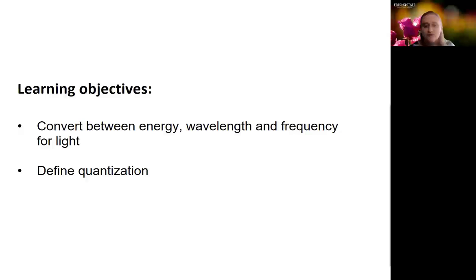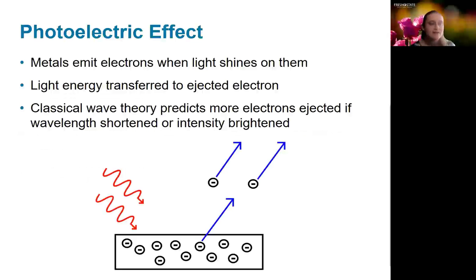So first of all, we're going to look at a classic experiment, which is the photoelectric effect. The photoelectric effect is illustrated from a classic experiment where light of a specific frequency is shined onto a metal and electrons are emitted from that metal. This means that the light is transferring energy to the metal and causing the electron to be emitted. Classical theory should predict that more electrons will be ejected if the wavelength is shortened or the intensity brightens, both of which should increase the total energy of the wave.